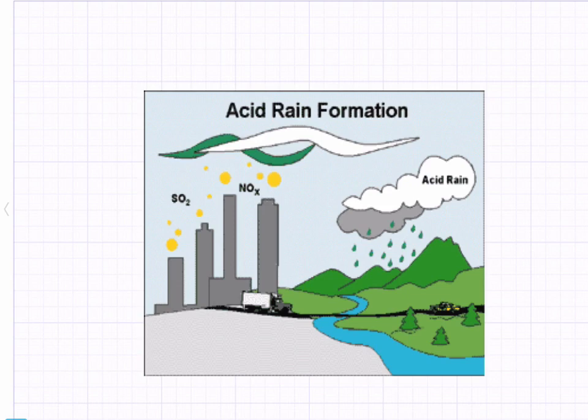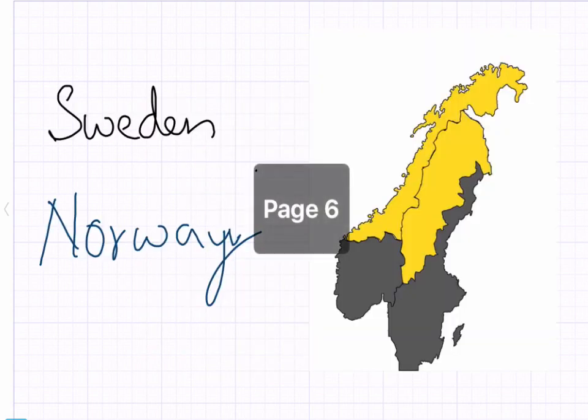It has become a cause of concern to all countries. The countries worst affected by acid rains are southern Sweden, Norway, parts of central Europe and eastern region of North America.